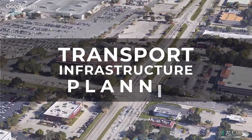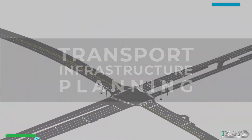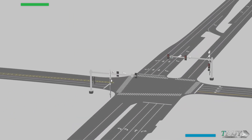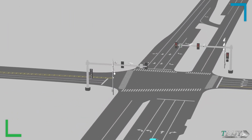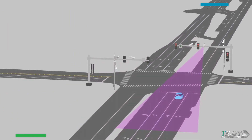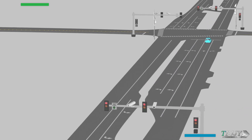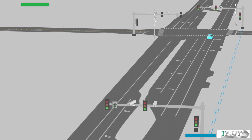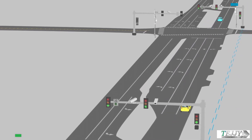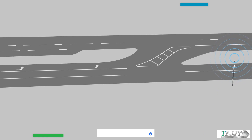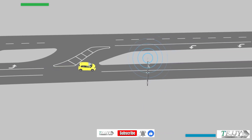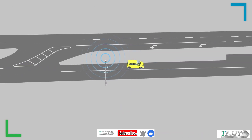Transport Infrastructure Planning. Transportation infrastructure is the underlying system of public works designed to facilitate movement. It involves prediction of the most probable pattern of land development for the horizon year, usually taken as 20 years, and the transport demands created by that land use are estimated.